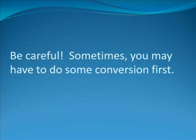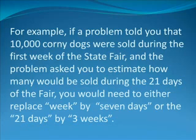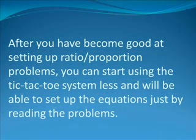Be careful. Sometimes you may have to do some conversion first, which is another ratio-proportion problem, as we showed earlier. For example, if a problem told you that 10,000 corny dogs were sold during the first week of the state fair, and the problem asked you to estimate how many would be sold during 21 days of the fair, you would need to either replace week by seven days, or the 21 days by three weeks.